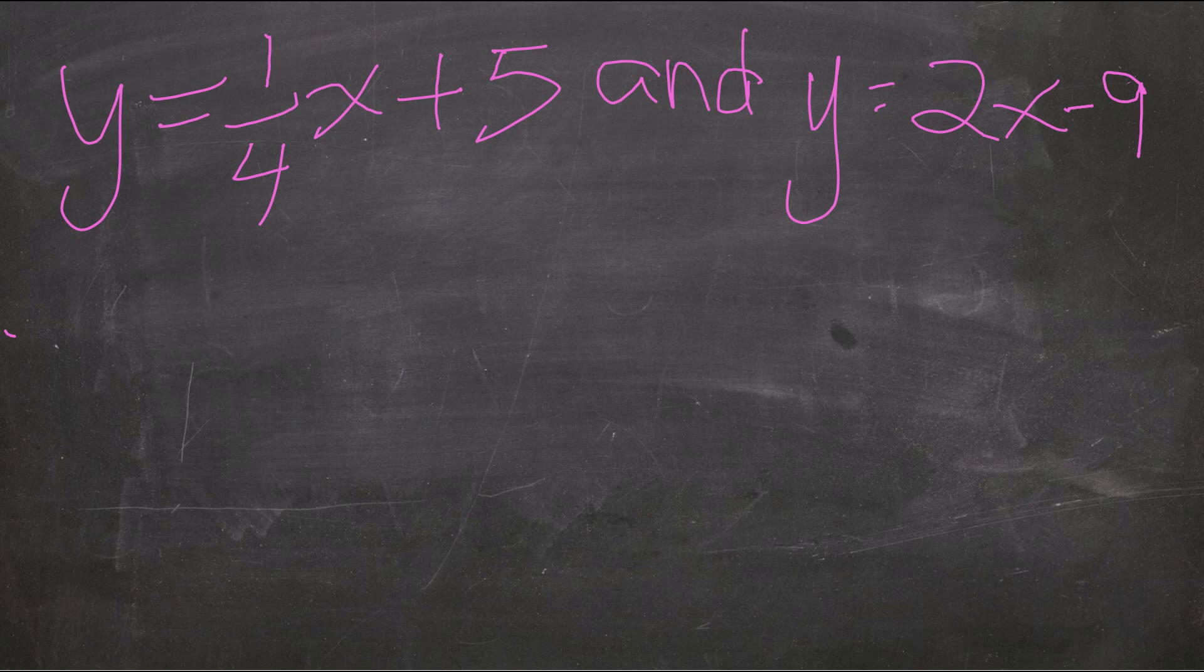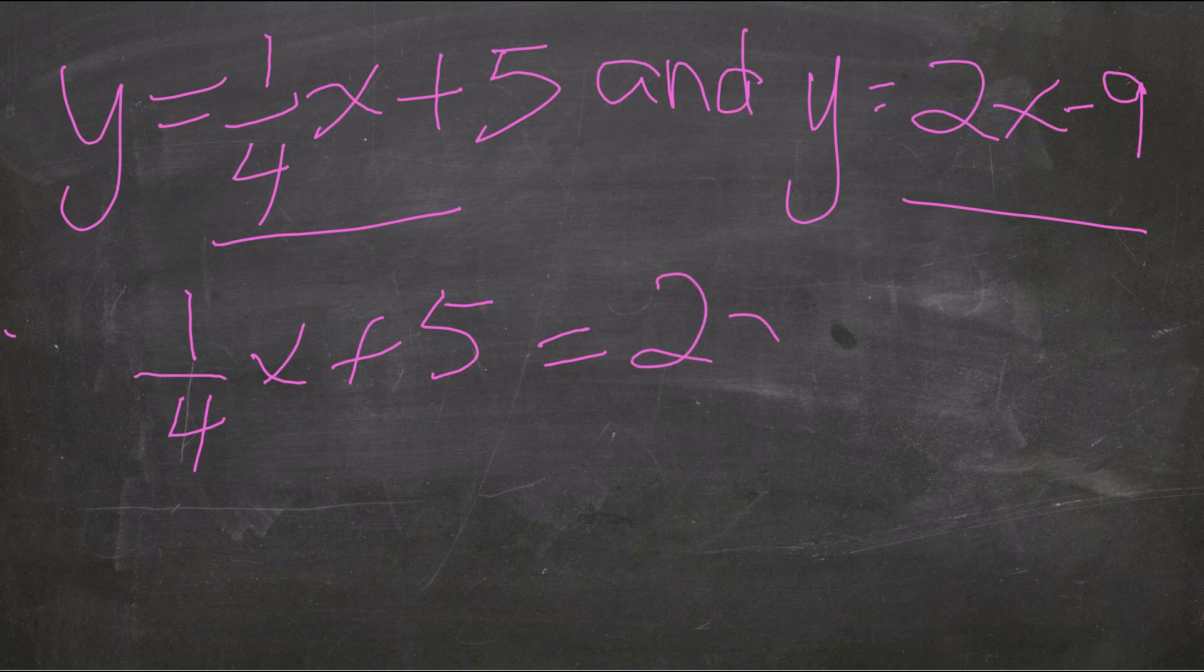You'll notice that both equations are set to y equals. So both equations equal y, which means we can set the two equal to each other. So we're going to write 1 fourth x plus 5 equals 2x minus 9. And that is how we can set up our equation to solve for x.